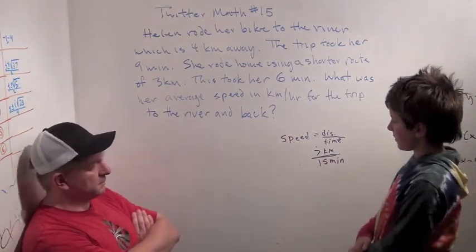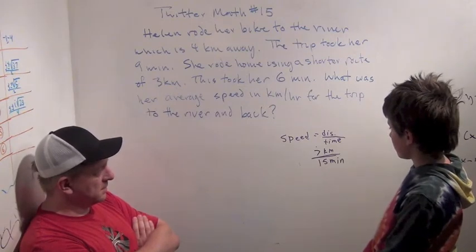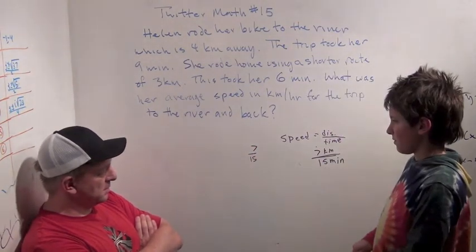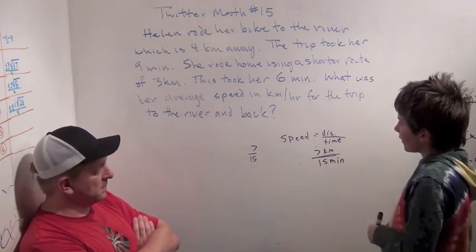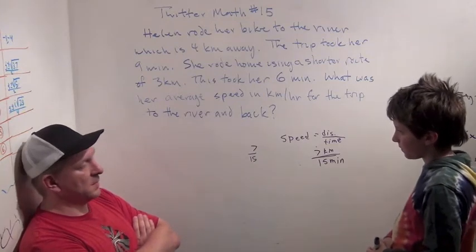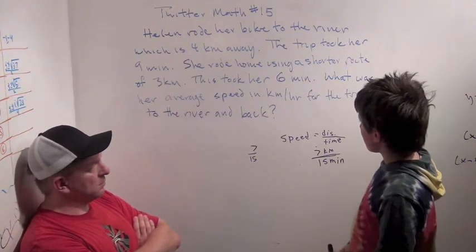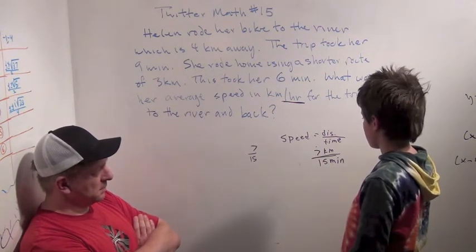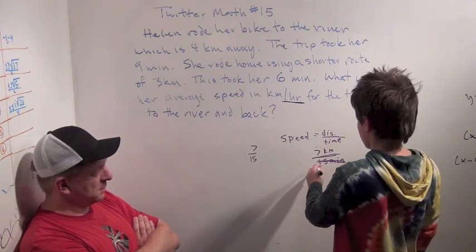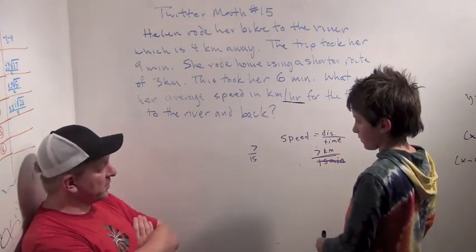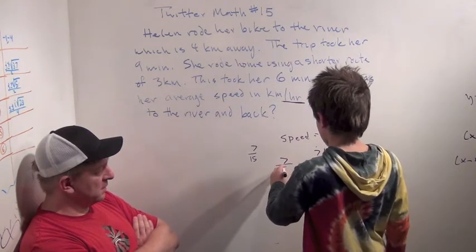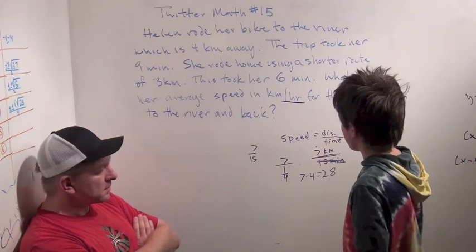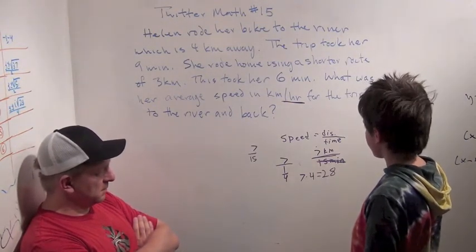It's 7/15ths — it can't be simplified. That's 7/15ths of a kilometer per minute. But the answer needs to be in kilometers per hour. Well, 15 minutes is just a quarter of an hour. So 7 kilometers over a quarter of an hour — that's 7 times 4, or 28. 28 kilometers per hour for the entire trip.